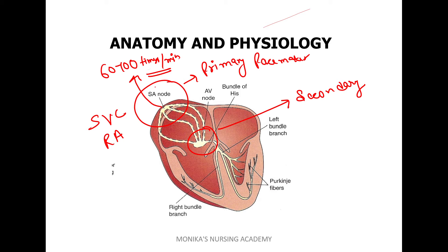Next is the AV node. The AV node is located at the lower aspect of the right atrium, as you can see in the image — this whole region is the right atrium, and the AV node is at its lower aspect.